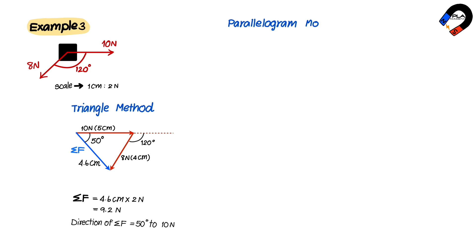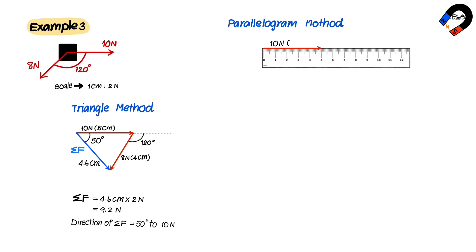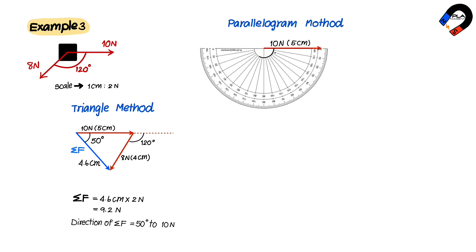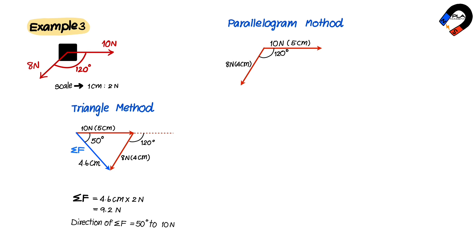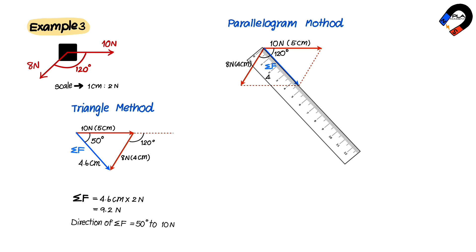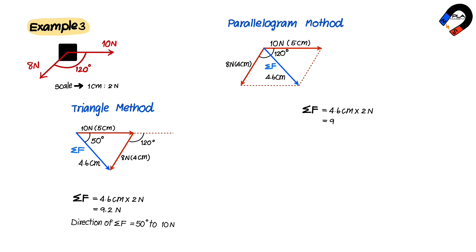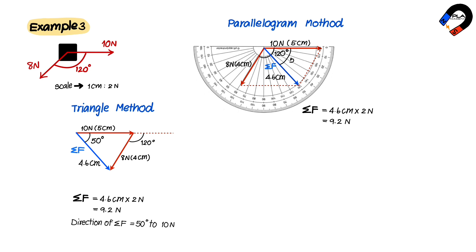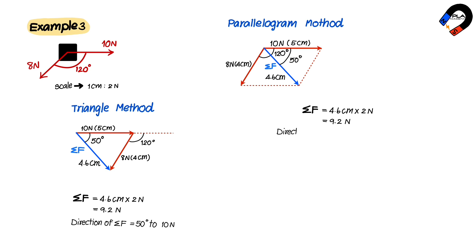To find the resultant force for Example 3 using the parallelogram method, draw 10 Newtons for 5 centimeters. Measure the angle at the tail using a protractor as 120 degrees, link the tails of the 10 Newtons and 8 Newtons forces, and draw 8 Newtons for 4 centimeters. Complete the parallelogram; the resultant force is the diagonal. Its magnitude is 4.6 centimeters × 2 Newtons = 9.2 Newtons, and its direction is 50 degrees to the 10 Newtons force.